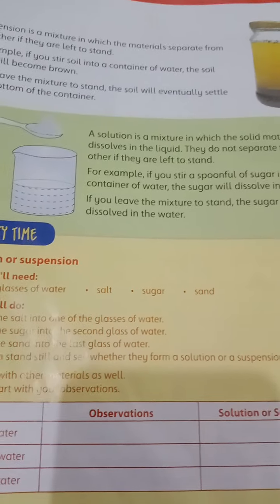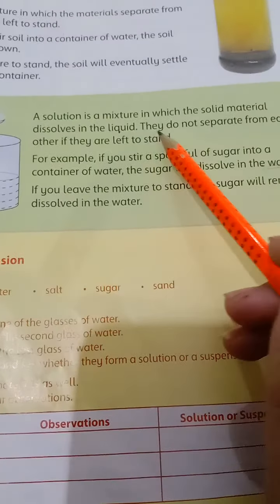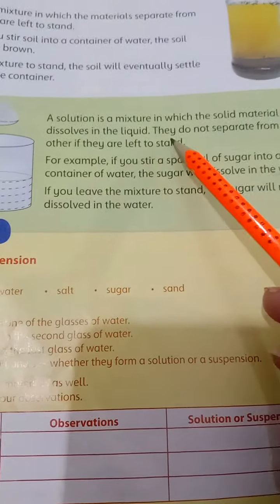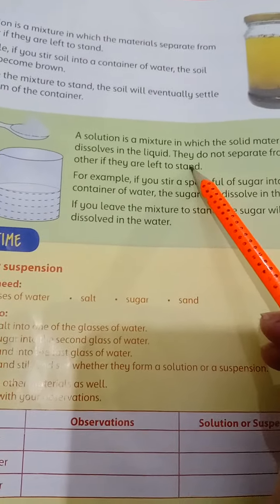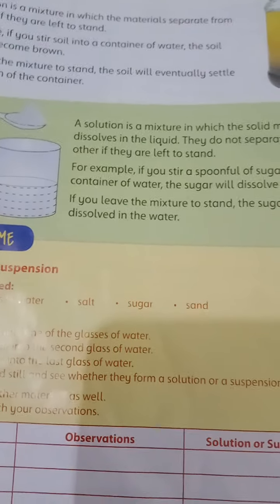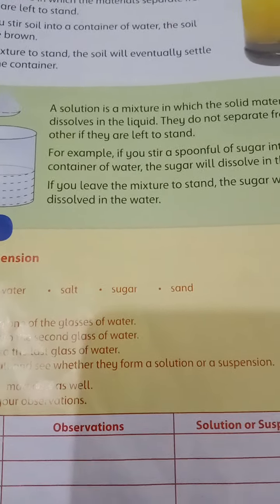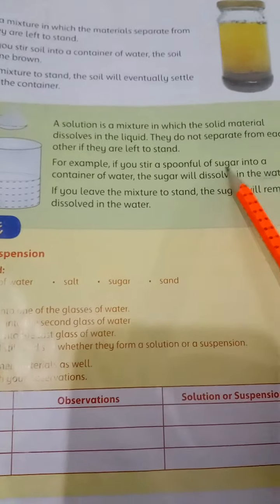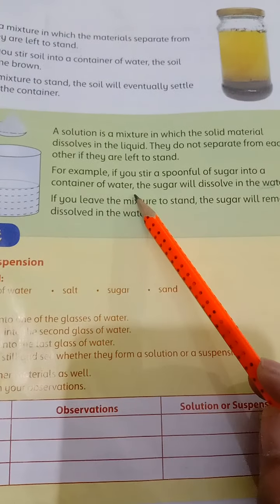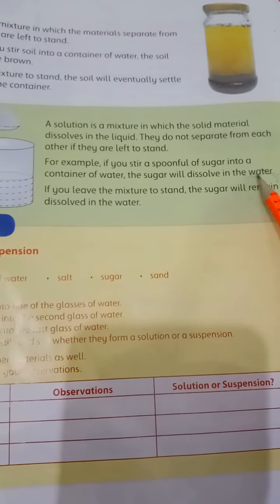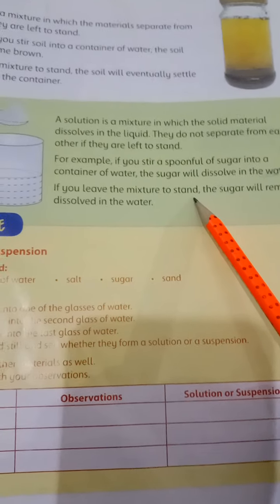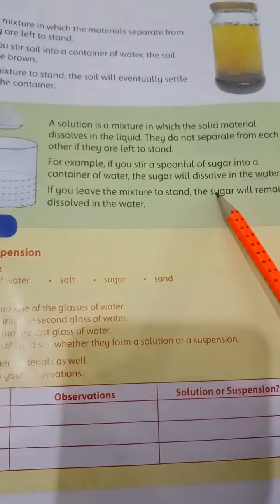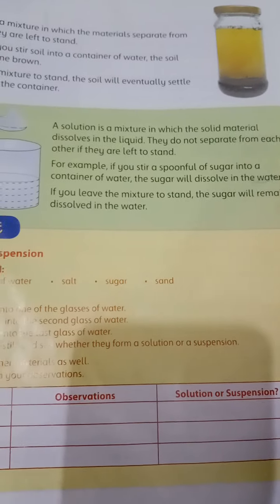A solution is a mixture in which the solid material dissolves in the liquid and the particles do not separate from each other if left to stand. For example, if you stir a spoonful of sugar into a container of water, the sugar will dissolve in the water. If you leave the mixture to stand for a little while, the sugar will remain dissolved in the water.